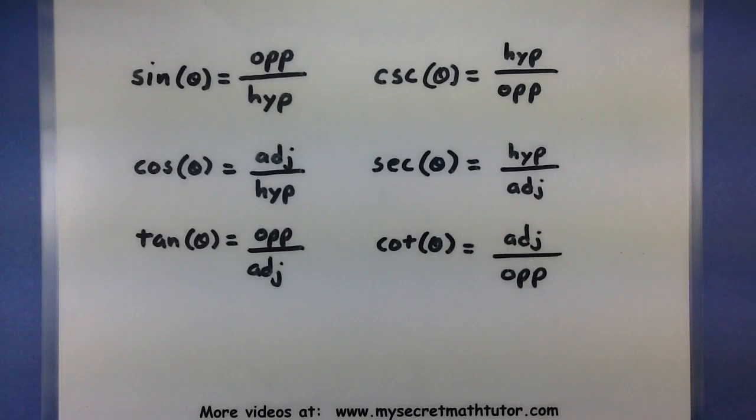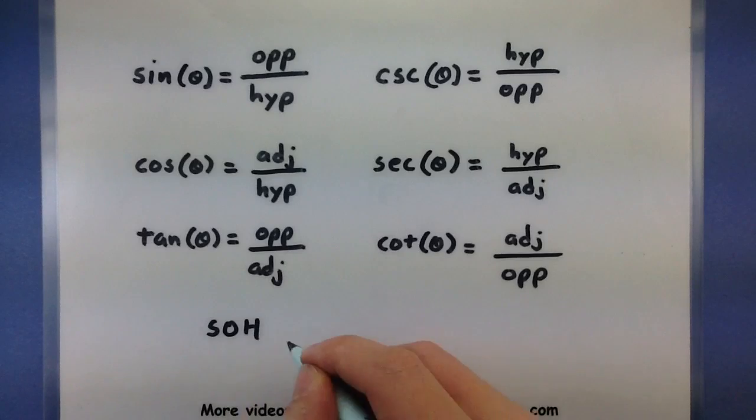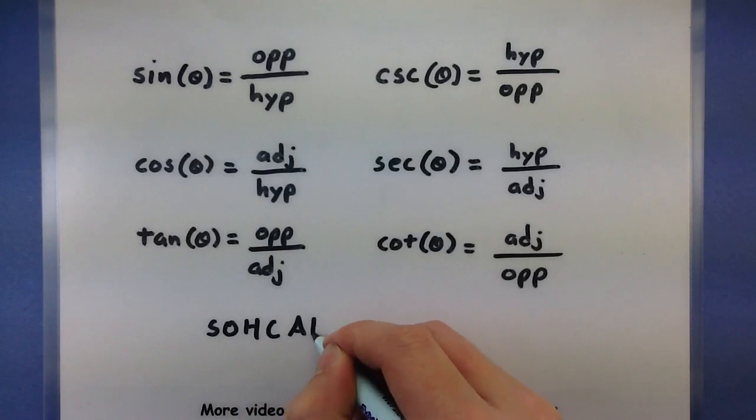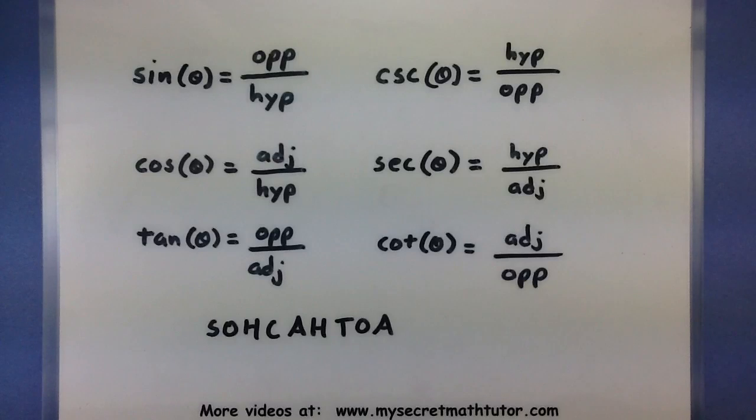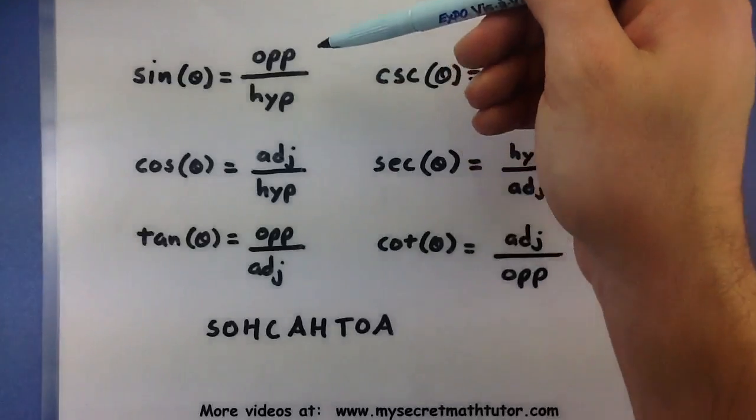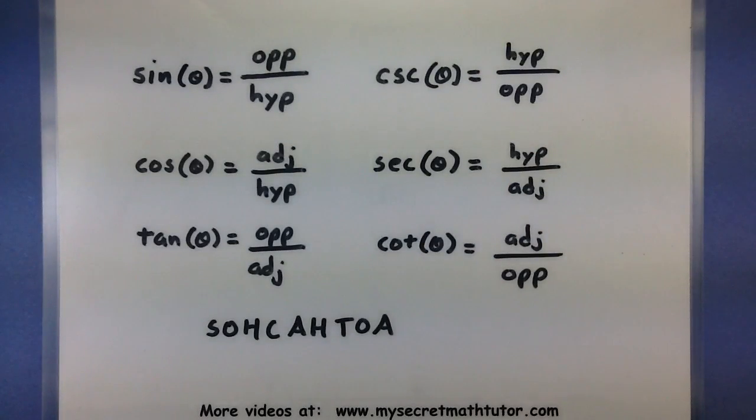And a good mnemonic for memorizing these first trigonometric functions is this: Some old horse caught a horse taking oats away. If you can remember that, then you basically have the first trigonometric functions down, and then you can find the rest by taking the reciprocals. This has another nice ring to it. This is known as SOHCAHTOA.